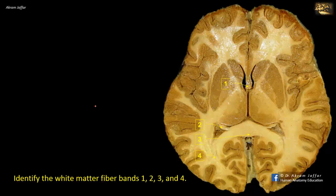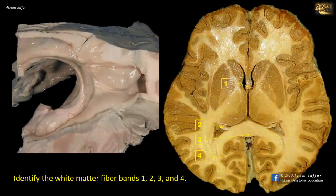The fornix is a bundle of association fibers in the limbic system. It begins as a sheet of myelinated axons on the ventricular surface of the hippocampus called the alveus. The fibers aggregate at the medial region of the hippocampus as the fimbria. The fimbria continues as the crus at the posterior limit of the hippocampus beneath the splenium of the corpus callosum.